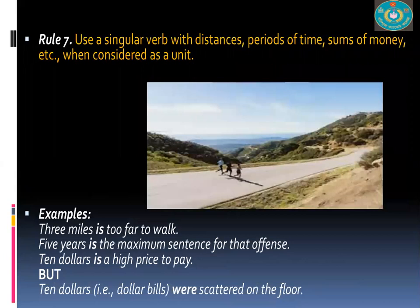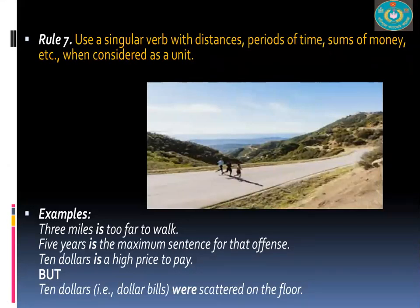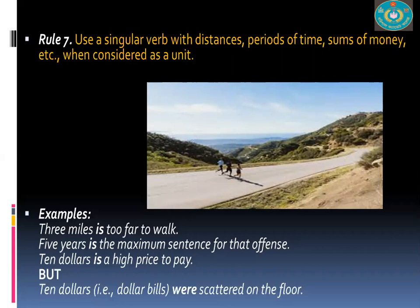Rule Eight: Use a singular verb with distances, periods of time, sums of money, etc., when considered as a unit. 'Three miles is too far to walk.' 'Five years is the maximum sentence for that offense.' 'Ten dollars is a high price to pay.' However, 'Ten dollars were scattered on the floor' uses plural because the dollars are not acting as a unit — they are scattered individually.